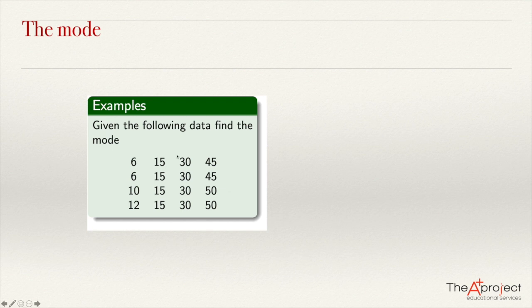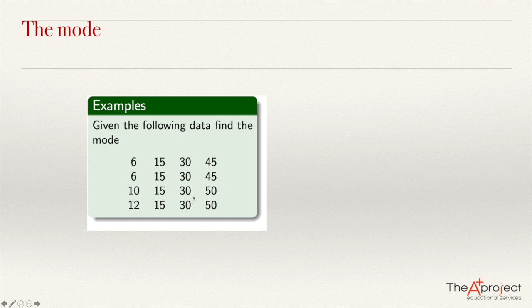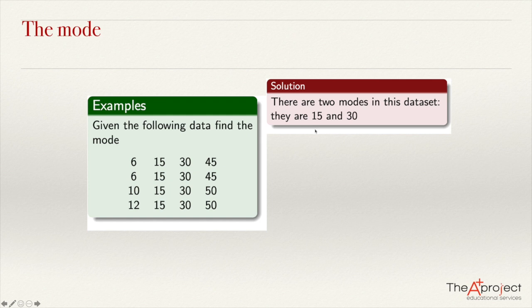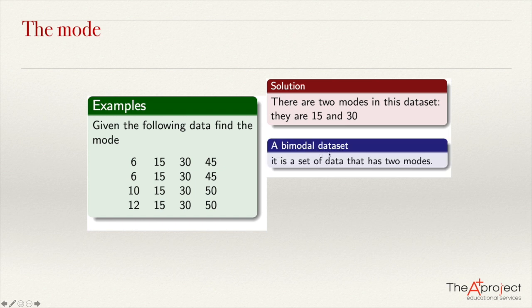Another example: we have this data set already ordered from the lowest to the highest, from top to bottom and left to right. It's easy to find the mode here. I notice that 15 occurs four times and 30 also occurs four times. These two data are the data with the highest frequency. So 15 and 30 are both modes — in this data set we have two modes. We say that we have a bimodal data set, which is a data set with two modes.